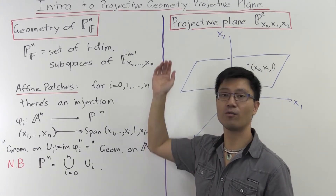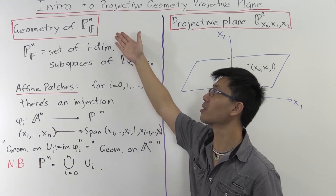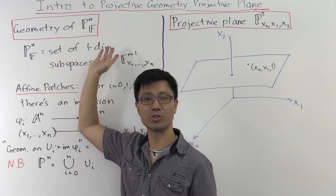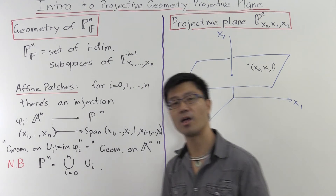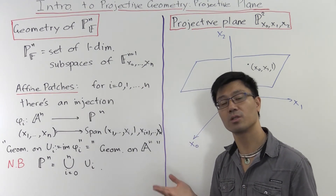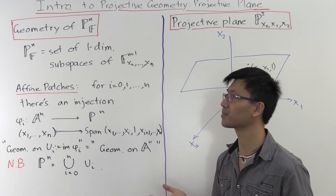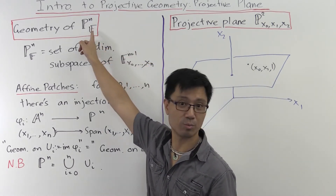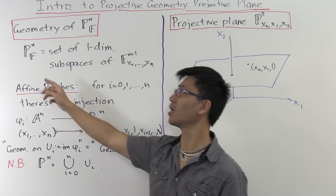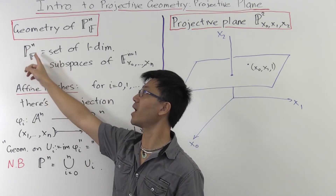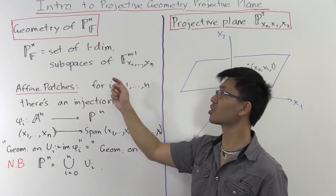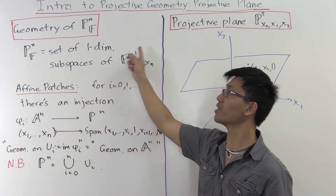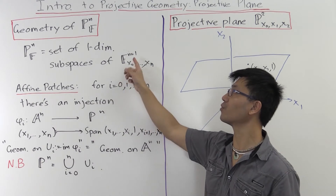To start off with, I want to have a look at projective space and tell you how to put the geometry on projective space. And the way we'll do it is the same way that we put the geometry on the projective line. So let's first recall what is the set of points of projective space. Projective space PNF is just going to be the set of one-dimensional subspaces of the vector space F to the n plus 1.